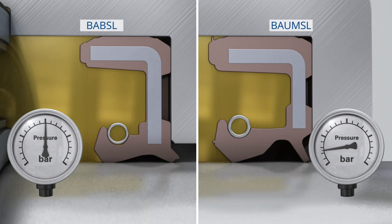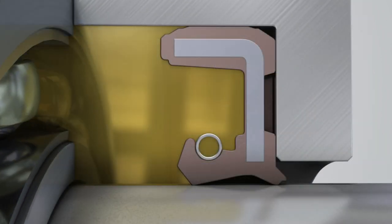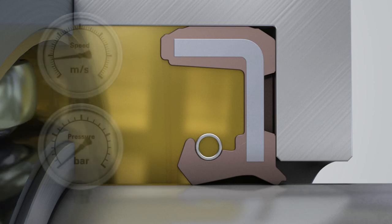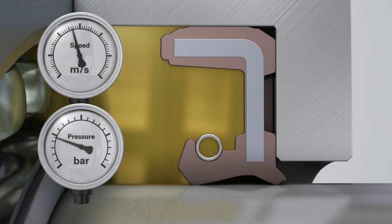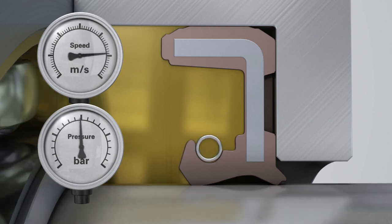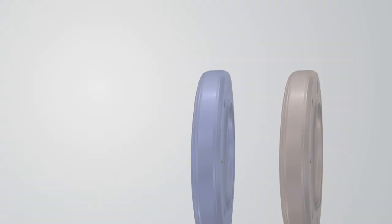Compared to standard designs, this has a shorter and stiffer sealing lip. The Simmering BABSL is the proven medium pressure seal and has been the solution of choice for decades. It provides consistent sealing performance over a wide range of operating conditions.